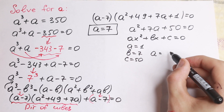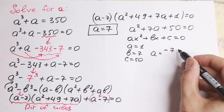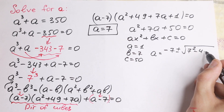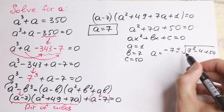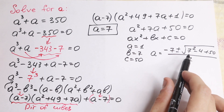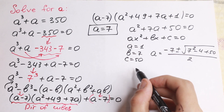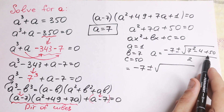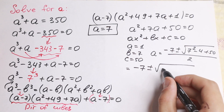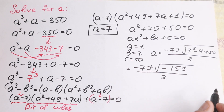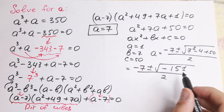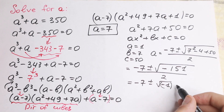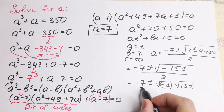So a is equal to minus b, that is minus 7, plus or minus the square root of b square minus 4ac — which is 7 square minus 4 times 1 times 50 — all divided by 2a, so divided by 2. In the square root we will have 49 minus 200, which equals minus 151, all over 2. So we will have complex roots. We can write it as minus 7 plus or minus square root of minus 1 times square root of 151, all over 2.